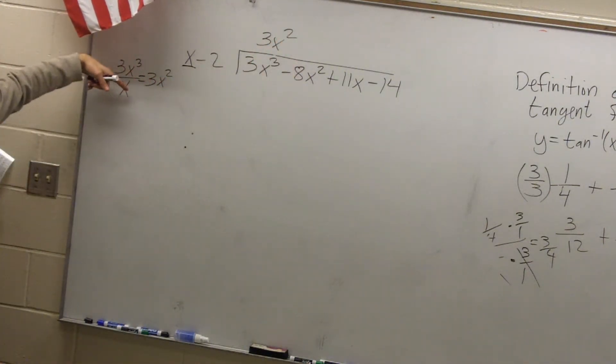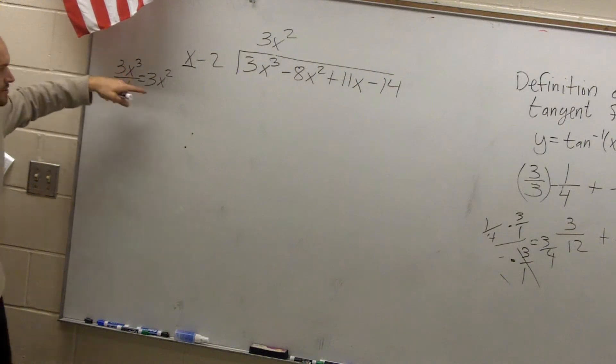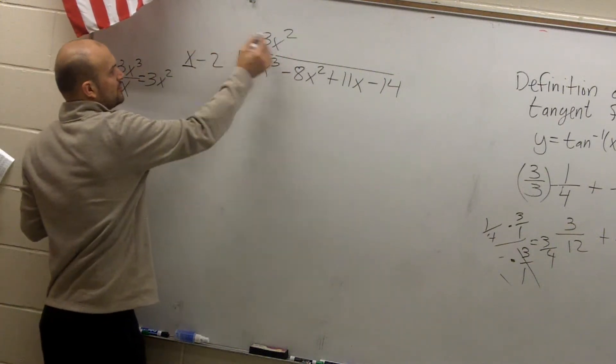Remember, you subtract the exponents. 3 minus 1 is 2. 3 divided by 1 is 3. Therefore, that's your first answer. You multiply it by both terms.